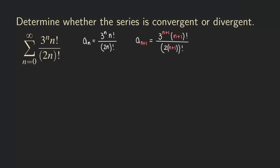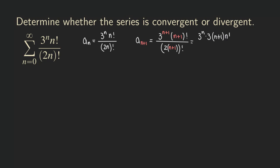We simplify before putting it in the limit. Using rules of exponents, 3^(n+1) breaks apart into 3^n times 3. For the (n+1) factorial, since we had n factorial in the previous term, we can write (n+1)! as (n+1) times n factorial.